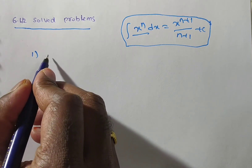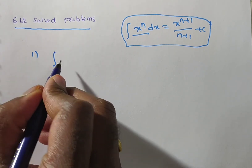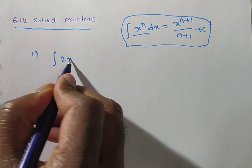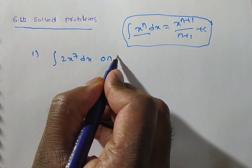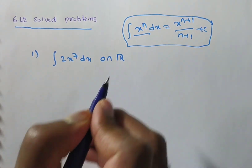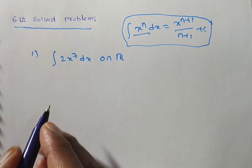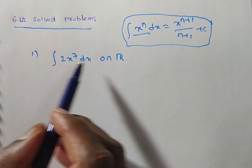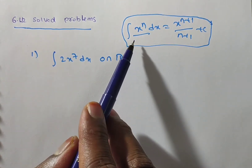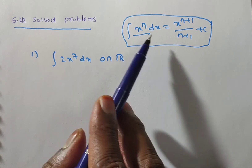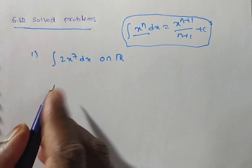The first given problem is: evaluate or find the integral of 2x to the power of 7 dx on the real number system. You can see the given integration is in the form of integral x to the power of n dx — that is, in standard form 1.